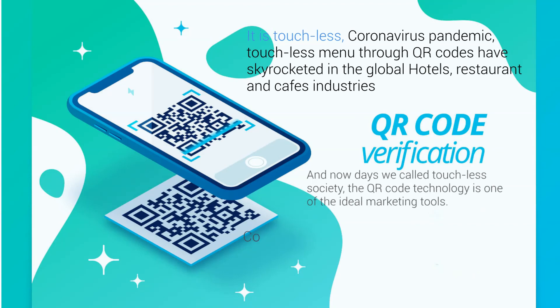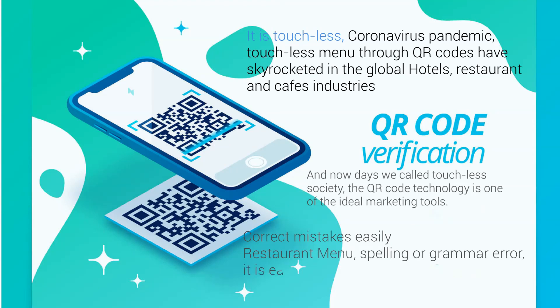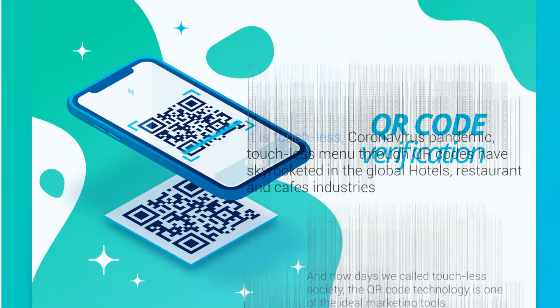The sixth benefit is that you can correct mistakes easily. For example, a restaurant menu with a spelling or grammar error can be edited quickly, conveniently, and as often as needed.